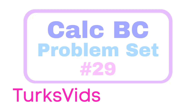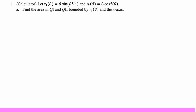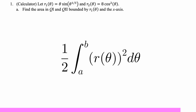In this video we're doing CalcBC problem set number 29. The problems and playlist are in the description below. Number one is a calculator problem. R1 is theta times sine of theta to the one-third. R2 is 8 cosine squared of theta. For part A, we want to find the area in quadrant one and two bounded by R1 of theta and the x-axis.